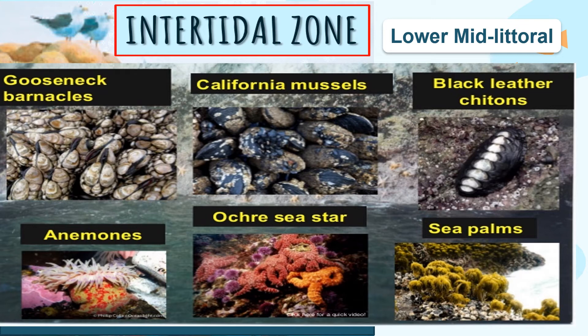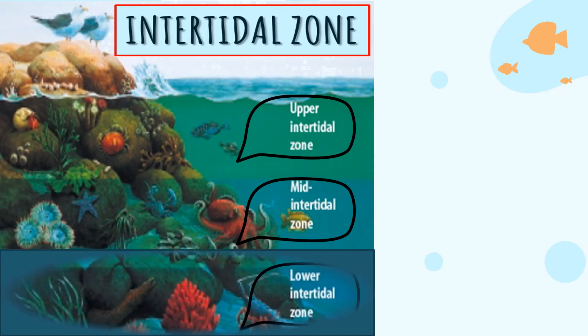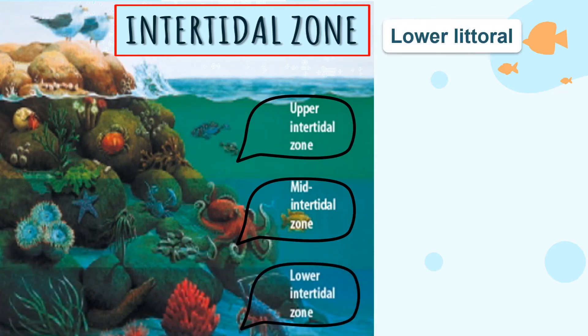There is a higher population of marine vegetation — specifically seaweeds — in the middle tide zone. Apart from being more populated, life in the middle tide zone is more diversified than in the high tide and spray zones.